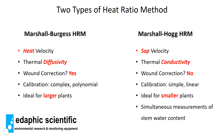The Marshall-Burgess HRM measures heat pulse velocity, whereas the Marshall-Hogg measures sap velocity. The Marshall-Burgess measures thermal diffusivity; the Marshall-Hogg measures thermal conductivity. The Marshall-Burgess method requires a wound correction, while the Marshall-Hogg does not. The Marshall-Burgess calibration is complex and uses a polynomial equation, whereas the Marshall-Hogg is simple and linear. The Marshall-Burgess is ideal for larger plants such as forest trees, while the Marshall-Hogg is better suited for smaller plants — herbaceous plants or saplings in a glasshouse. The Marshall-Hogg also allows simultaneous measurement of stem water content.